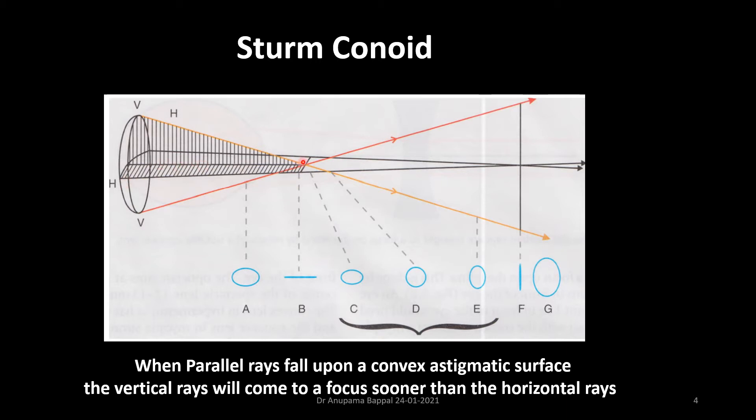And because of the difference in the convergence, we would get different forms of image at different sections. For example, if the retina was at A, then this is the image that you would get. And if the retina was at B, this is the image that you would get. It's because of the difference in the convergence of the ray of light, we get different images at different sections.